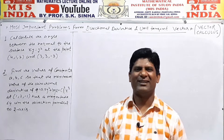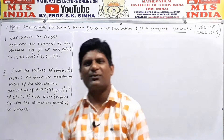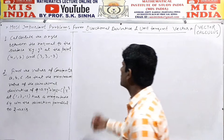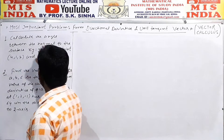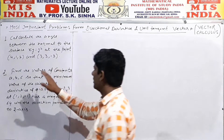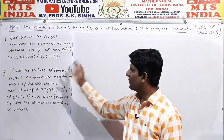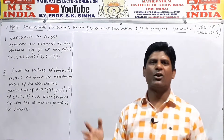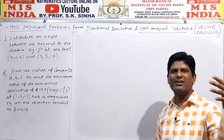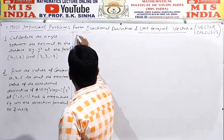I am Professor S.K. Sinha from the MIS channel. Let's start with the most important question from the topic Directional Derivative. Question number 1: Calculate the angle between the normal to the surface xy = z² at the points (4,1,2) and (3,3,-3). This is a very important question that has come in almost all Indian university exams. Round please and make a proper note.